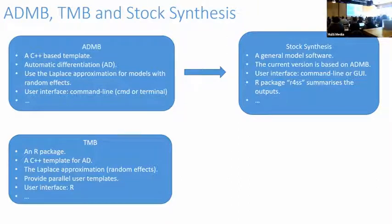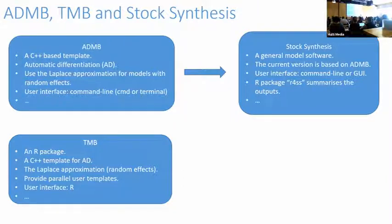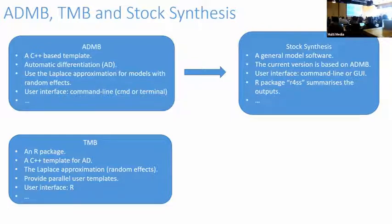AD&B is command-line based. If you use Windows, you need to know DOS or PowerShell; if you use Linux, you just use the terminal. Once you run the model, you can use R scripts to collect data and generate outputs. AD&B basically requires Rtools, so you need to install Rtools first because it includes C++. Once you have that, you install TMB. When building your models, you need to understand C++ first, then use R to call the C++ code.